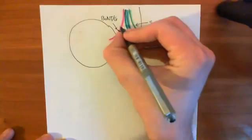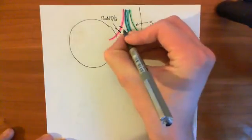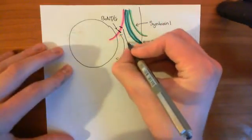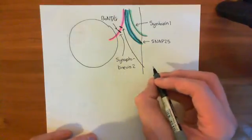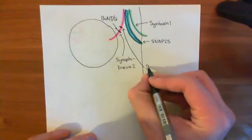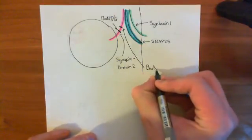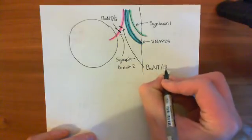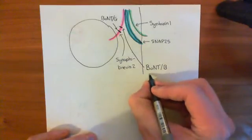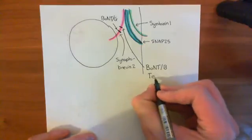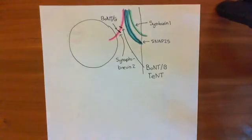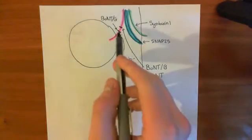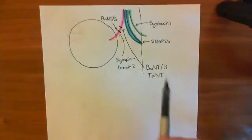The next site is just upstream of that, here. And this is the cutting site for botulinum neurotoxin B, so BNTB. And interestingly, it's also the cutting site for tetanus neurotoxin. Now, we haven't talked about tetanus neurotoxin at all. Tetanus neurotoxin does cut snares as well, and it cuts specifically synaptobrevin at the same point as botulinum neurotoxin B.